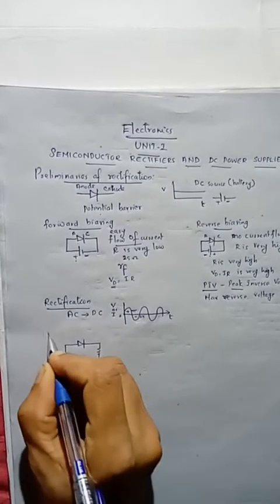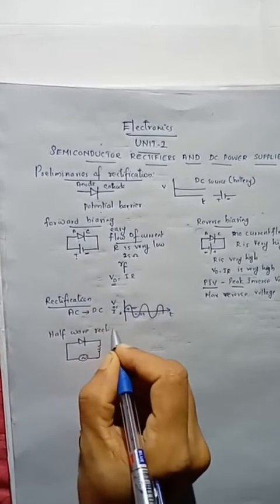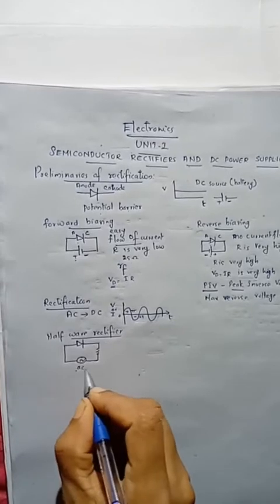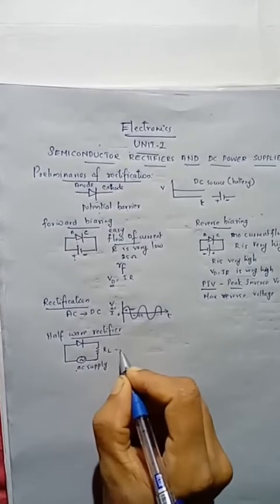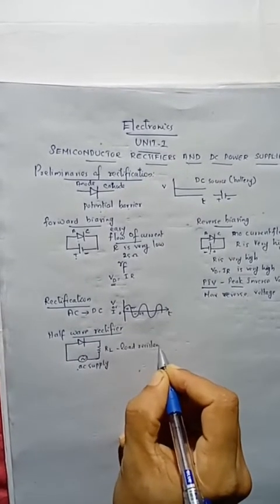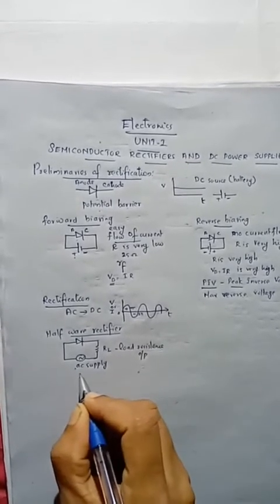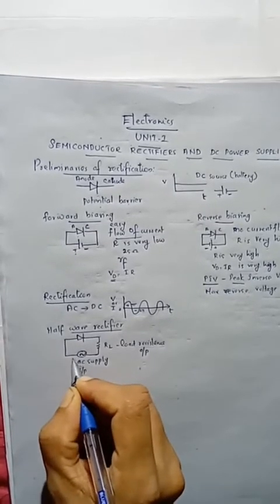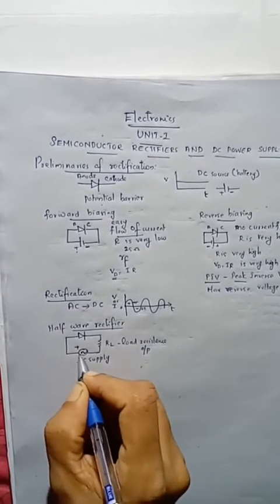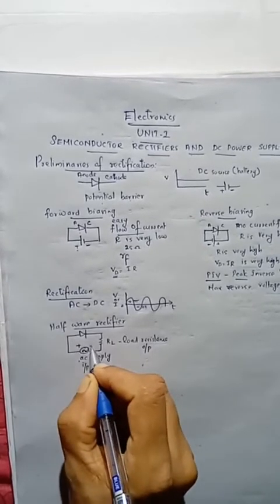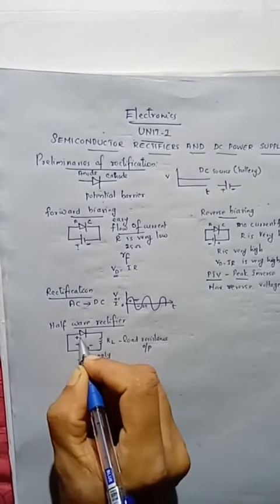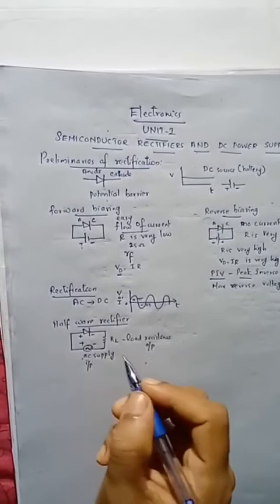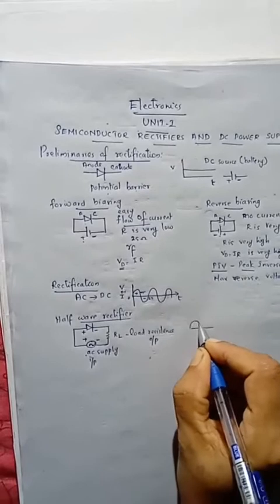Using the diode circuit, we can design a rectifier circuit known as the Half Wave Rectifier. In this circuit, there is an AC supply and a load resistance RL across which we take the output voltage. During the positive half cycle, the anode of the diode gets positive voltage and the cathode gets negative voltage, so the diode conducts. The output from 0 to pi will be the same as the input.